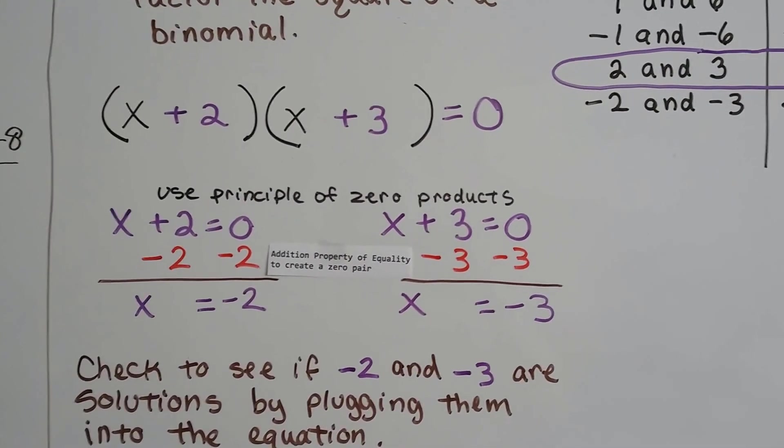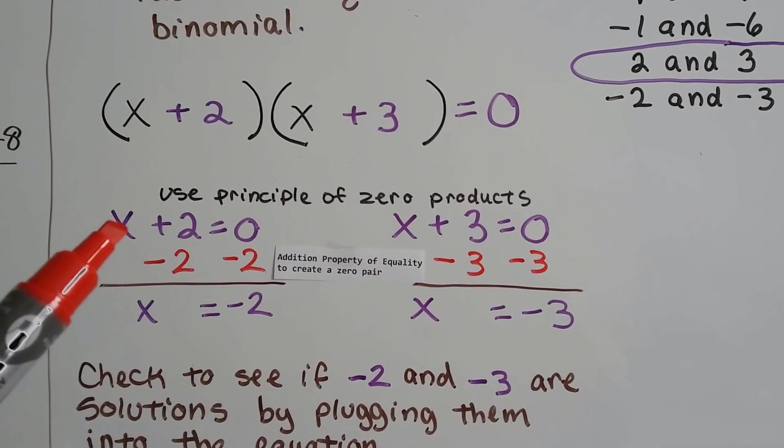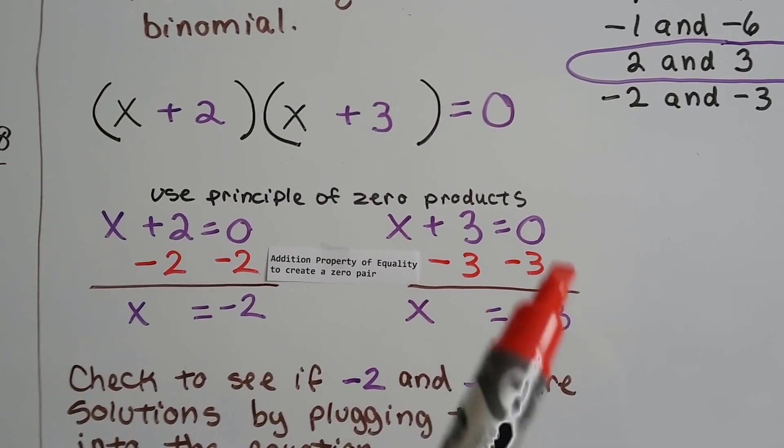And we set it to equal 0 and use the principle of zero products. Now we've got x plus 2 equals 0 and x plus 3 equals 0.